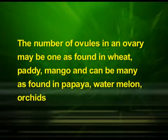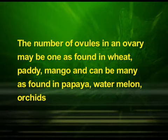The number of ovules in an ovary may be one, as found in wheat, paddy, and mango, and can be many, as found in papaya, watermelon, and orchids. Now let us familiarize ourselves with the structure of a typical angiosperm ovule. The ovule is a small structure attached to the placenta by means of a stalk called the funicle.